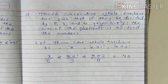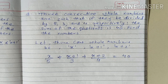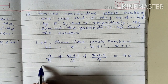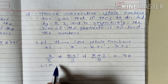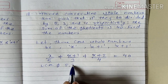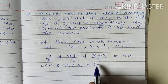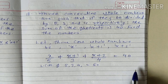What is the LCM of 5, 4, and 3? The LCM of 5, 4, and 3 is 60. So we multiply both sides by 60.